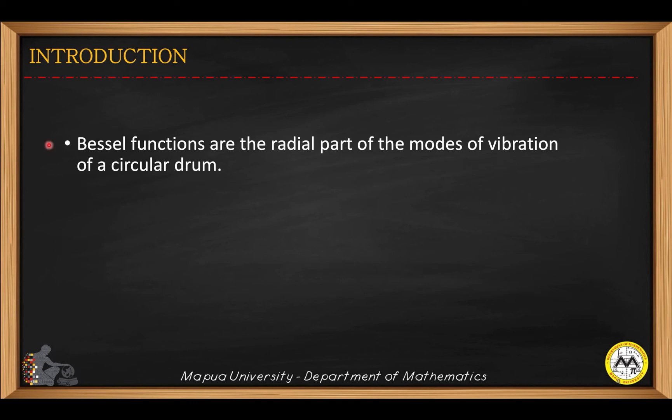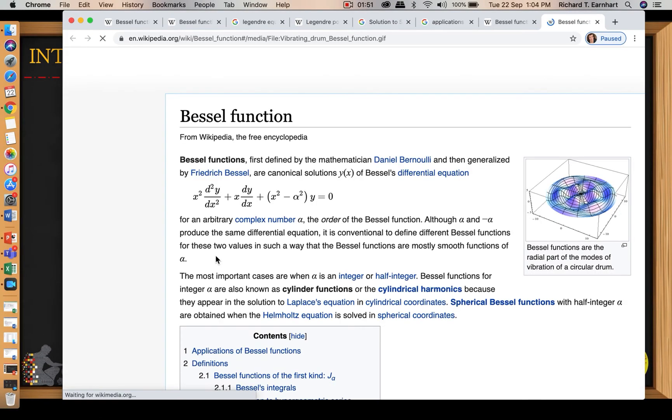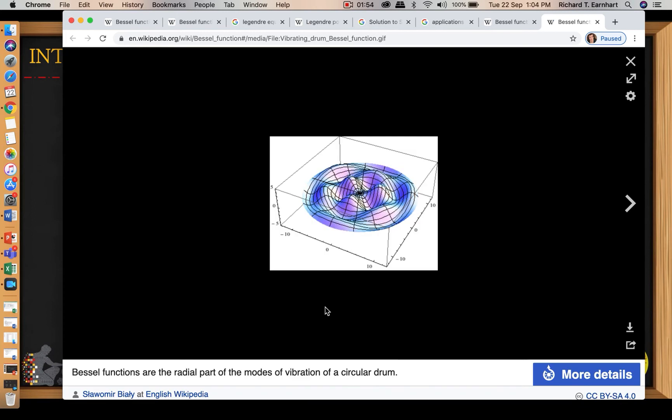Bessel functions are a radial part of the modes of vibration of a circular drum. We have here an animation of a vibrating drum based on the Bessel eigenfunction, which illustrates the solution to a Bessel function representing the radial part of the modes of vibration of a circular drum.